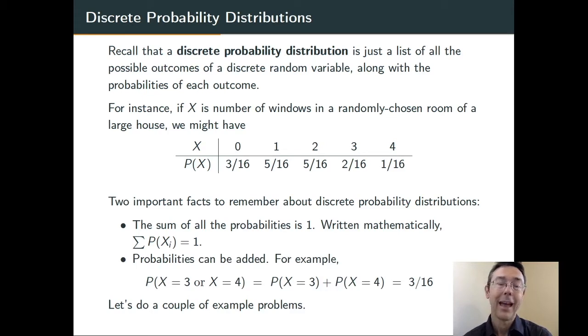More generally, probabilities add when we talk about discrete probability distributions. So if you want to know the probability that x is 3 or 4, you can do the probability that x is 3, the probability that x is 4, and add them together. In this case, you get 3/16.